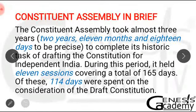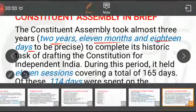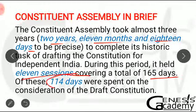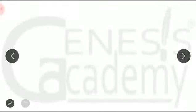The Constituent Assembly took almost three years — actually two years, eleven months, and eighteen days — to complete its historic task of drafting the Constitution. During this period it held 11 sessions, covering a total of 165 days. Out of these, 114 days were spent on the consideration of the draft Constitution.